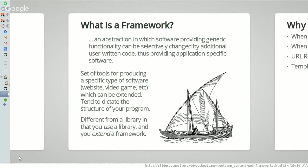One major difference between libraries and frameworks is that libraries tend to just give you functions and let you do what you want with them. Frameworks tend to dictate a structure to your code — they'll want certain folders to exist, they'll want functions to be organized in a certain way. So it's not just functions that you can use; it's actually a structure to your code, including helper functions like a library, but also things that you need to do specifically to use that framework.